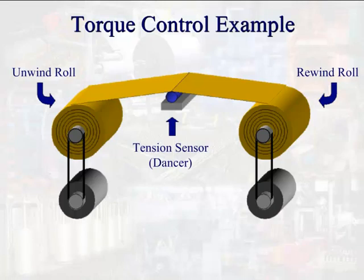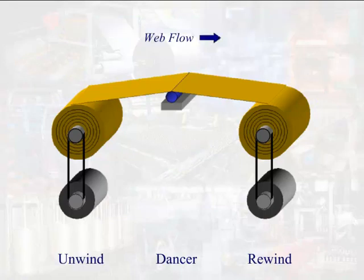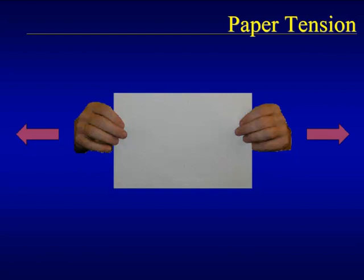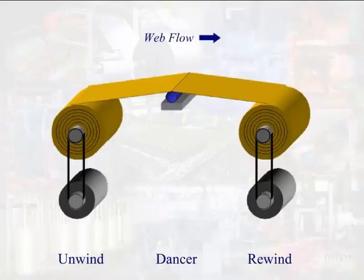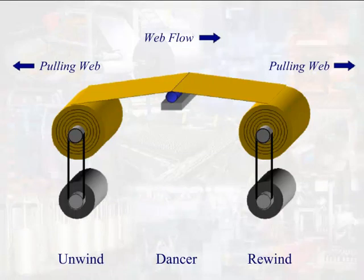Now let's look at an industrial torque control application. This is a simple paper winder system consisting of an unwind roll that material is loaded from, a rewind roll that material is loaded onto, and a tension sensor or dancer that measures the tension in the paper — or web, as it is commonly referred to. Paper flows from the unwind roll to the rewind roll, requiring both motors to turn in the same direction. In order for the paper to be wound smoothly on the rewind roll, a certain amount of tension must be maintained. Consider holding a piece of paper taut in your hands — both sides must be pulled on. Similarly, both motors must pull on the paper, but in opposite directions. How hard they pull is dependent on feedback from the dancer indicating how much tension is on the web.